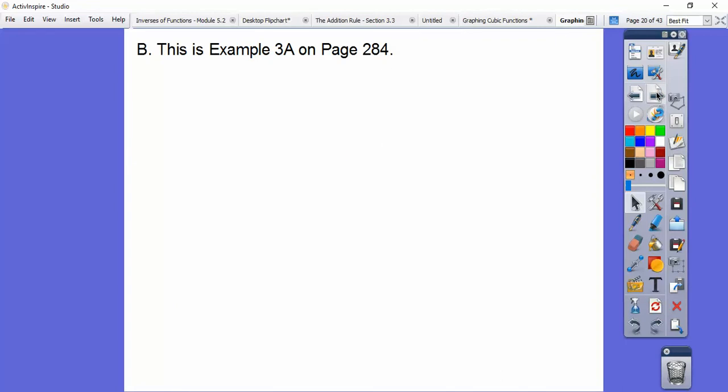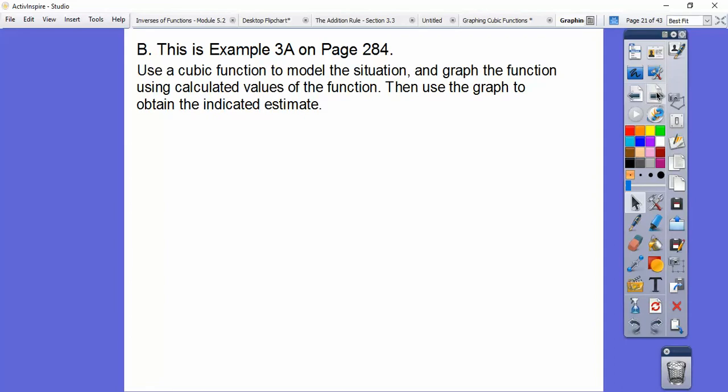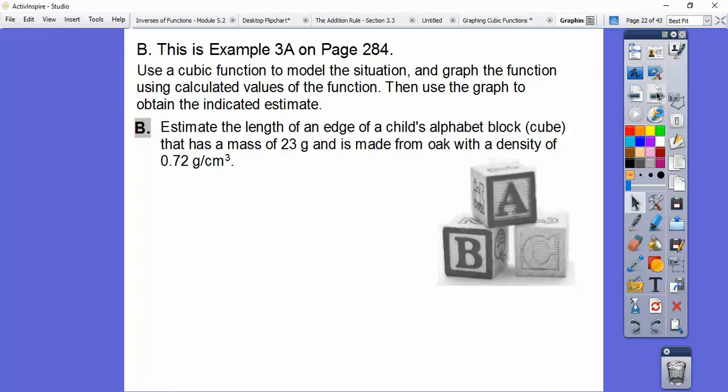So here's an application problem. This is example 3A on page 284. It starts off with these instructions: Use a cubic function to model the situation and graph the function using calculated values of the function. Then use the graph to obtain the indicated estimate. So estimate the length of the edge of a cube's alphabet block that has a mass of 23 grams and is made from oak with a density of 0.72 grams per cubic centimeter.